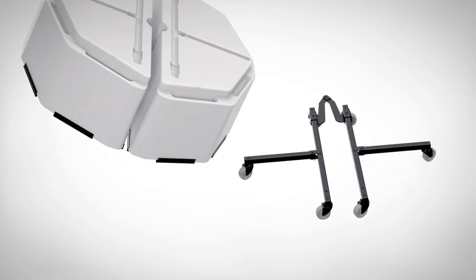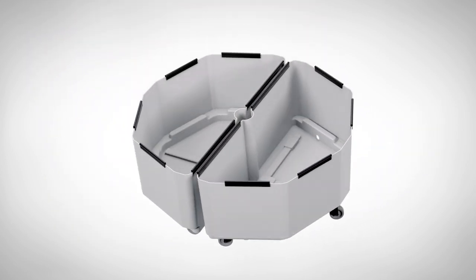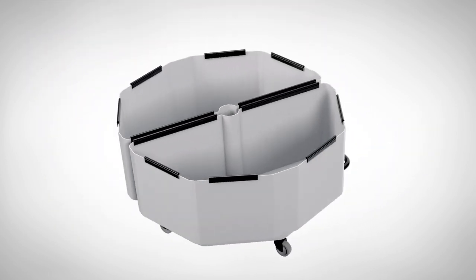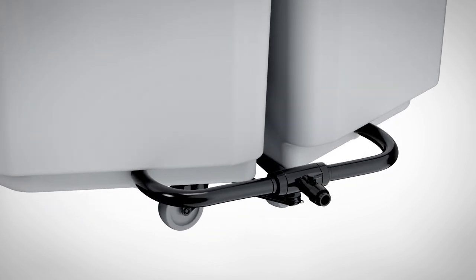Place the tanks on the caster unit aligning the caster frame to the grooves in the bottom of the tanks. When properly assembled, the drainage valve will be positioned directly above where the caster unit halves are attached to one another.